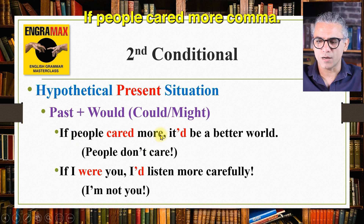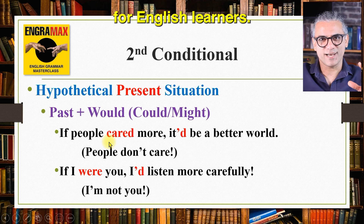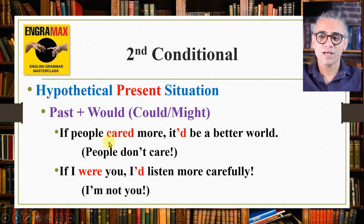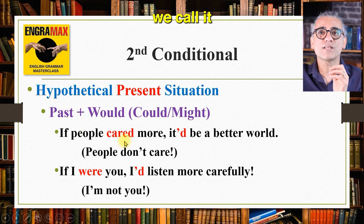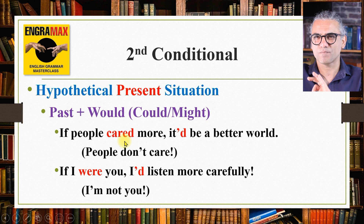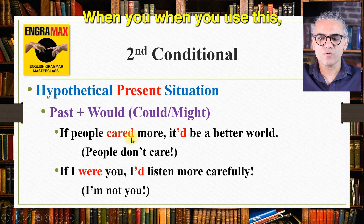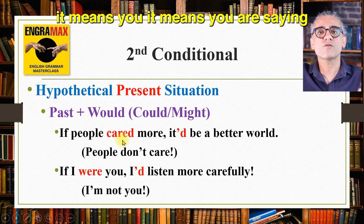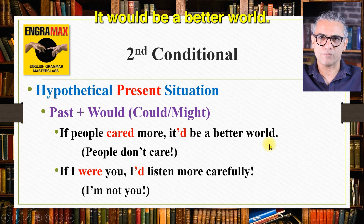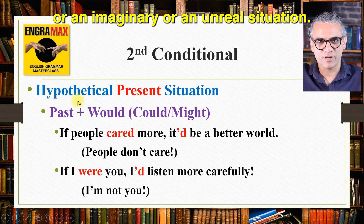Example: if people cared more — you see, this is in past form. This is the most confusing conditional for English learners, because we use a past form but we mean present and future. That's why we call this 'cared' here 'fake past' or subjunctive — we'll discuss subjunctives in a future lesson. If people cared more, it means you are saying that people don't care. The consequence would be: it would be a better world.